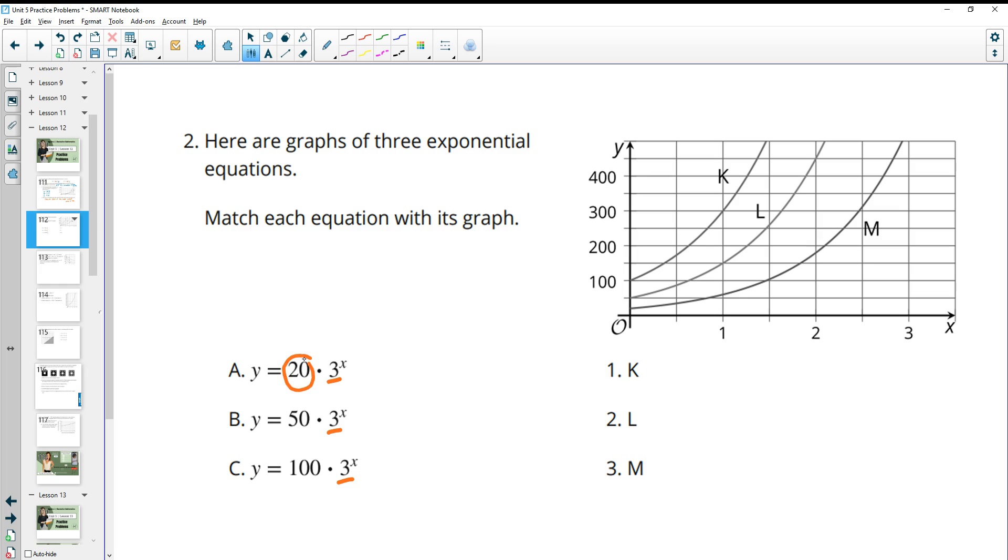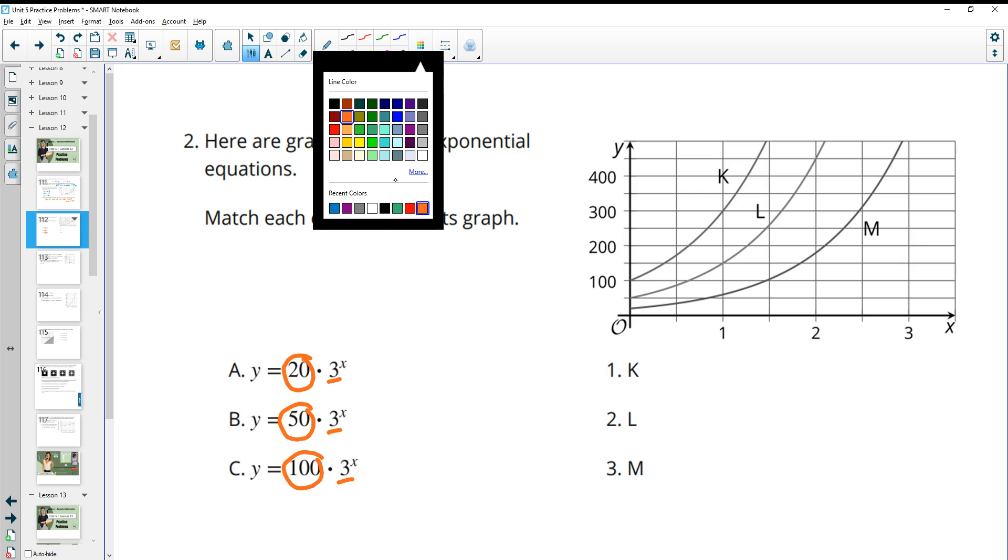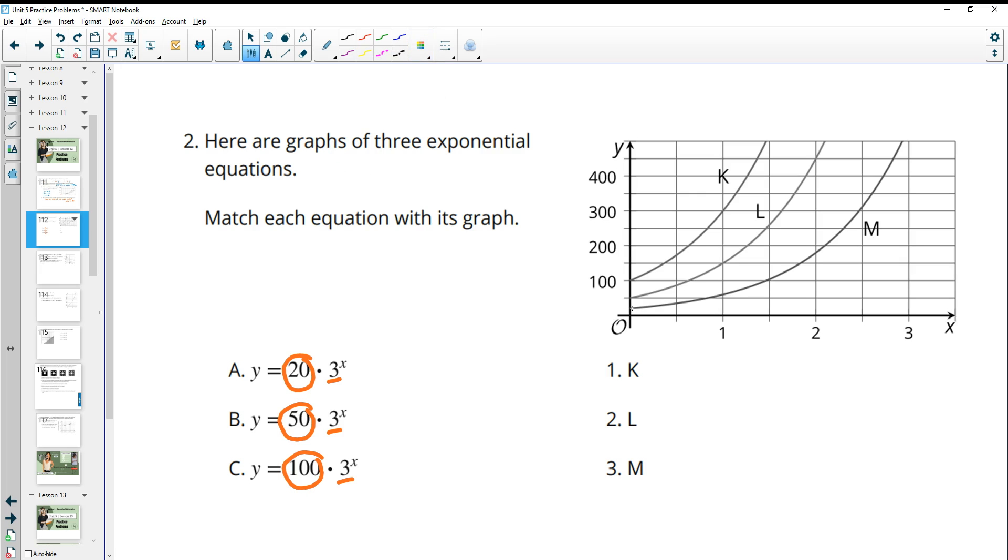But where they start on the vertical axis is because these are the initial values. So a is going to be the graph that is starting the lowest, and the one that starts the lowest is m.